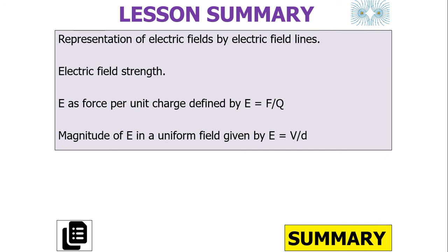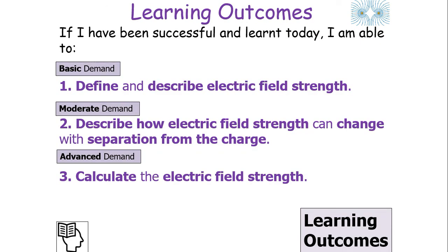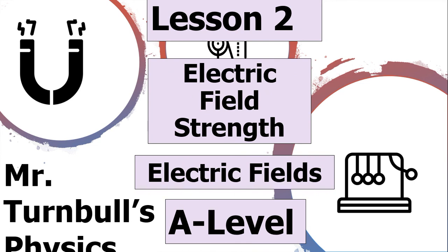To summarise today's lesson: we understand that electrical fields can be represented with field lines, we understand electrical field strength, we know E is defined as the force per unit charge, and that in a uniform field E equals V over D. We can define and describe electrical field strength, describe how it changes with separation from the charge, and calculate it. I hope you've enjoyed today's lesson on electrical field strength, which forms part of the electrical fields topic in AQA A-level physics. Thank you, and have a lovely day.